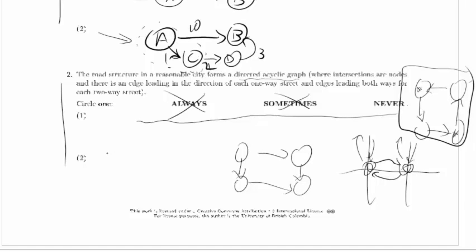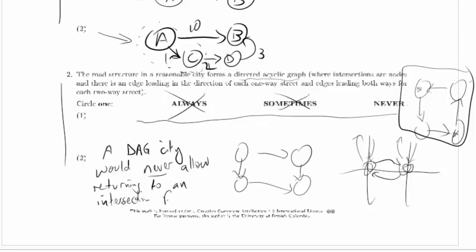Okay, and then we have to briefly sketch a proof as to why it's false. Because a DAG city would never allow returning to an intersection from which you depart, which is not reasonable, and it says it's a reasonable city.